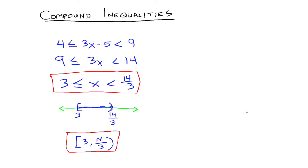Compound inequalities have the words 'and' and 'or'. Sometimes the 'and' is combined into one three-sided inequality. Go practice some problems, study well, and please let me know if you have any questions.